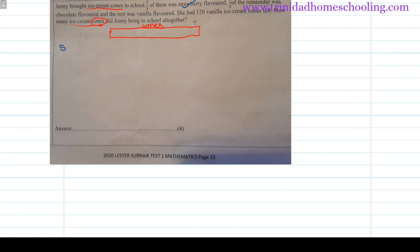We have it also split into chocolate flavored, C for chocolate, and the rest was vanilla flavored, V for vanilla. So we have this whole amount split into three parts, and we tick them off as we go along so that we know that we used everything in our question, that we didn't leave out anything.